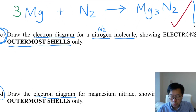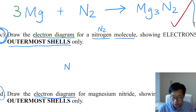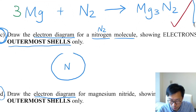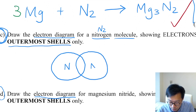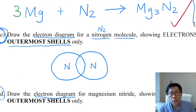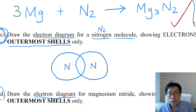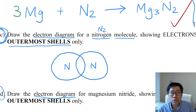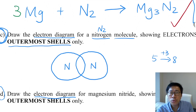Recall what you learned in the topic Covalent Bonding — the drawing of electron diagrams of molecules. For N2, two nitrogen atoms share their electrons together. Draw two circles, one for each nitrogen atom. Each nitrogen atom is a group 5 element, so there are 5 electrons in the outermost shell. To become stable it wants 8 electrons, so each nitrogen atom needs 3 more electrons.